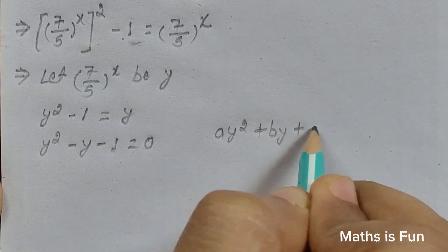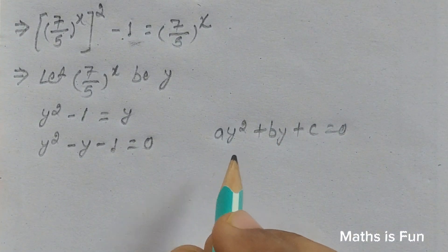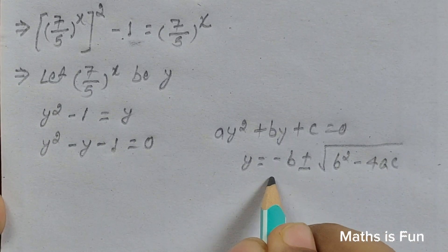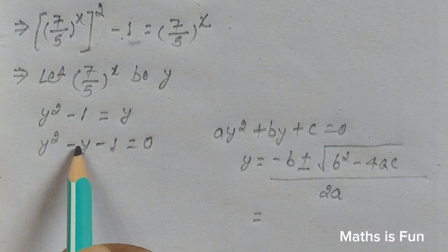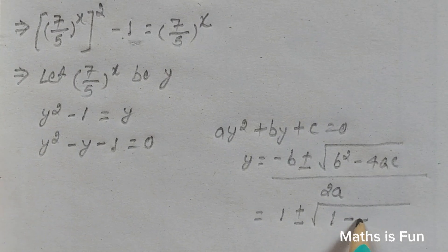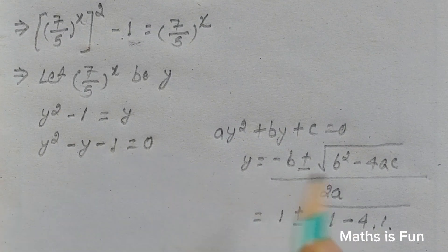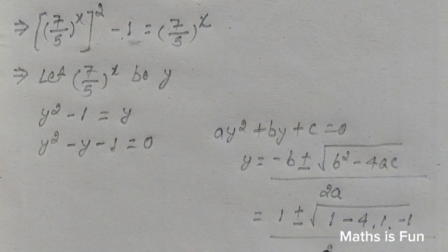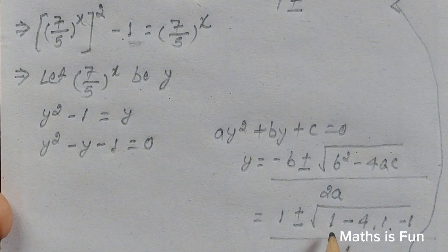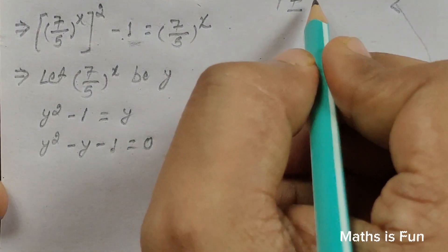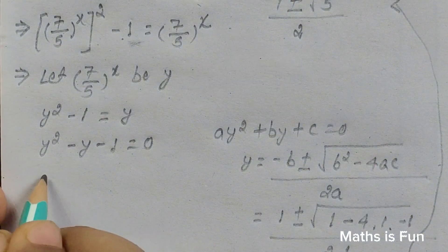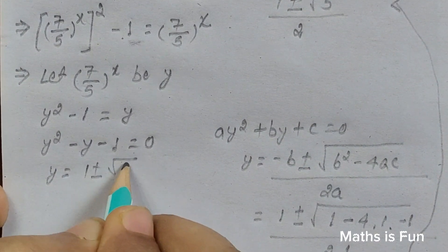This is a quadratic equation in the format ay squared plus by plus c equals 0. Using the quadratic formula, y equals minus b plus or minus root of b squared minus 4ac, all over 2a. Here a equals 1, b equals minus 1, and c equals minus 1. So y equals 1 plus or minus root of 1 minus 4 times 1 times minus 1, over 2, which simplifies to 1 plus or minus root 5, over 2.